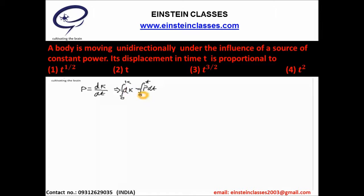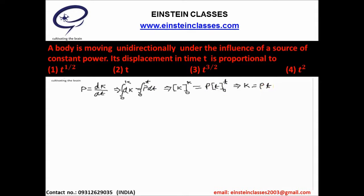At t = 0, the kinetic energy of the body is 0. At any time t, the kinetic energy is K. The integration of dK will be K, taken from 0 to K. Since power P is constant, it comes out of the integral, and the integration of dt from 0 to t equals t. After integration we get K = Pt, and since K = ½mv², we have ½mv² = Pt.